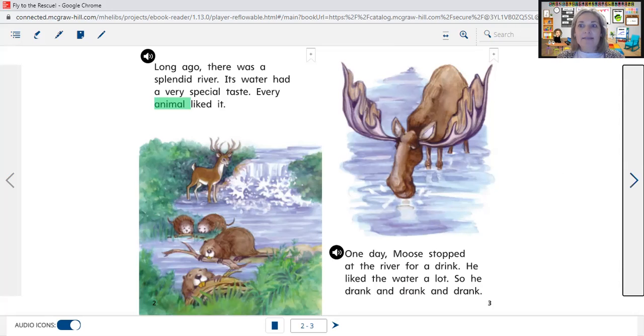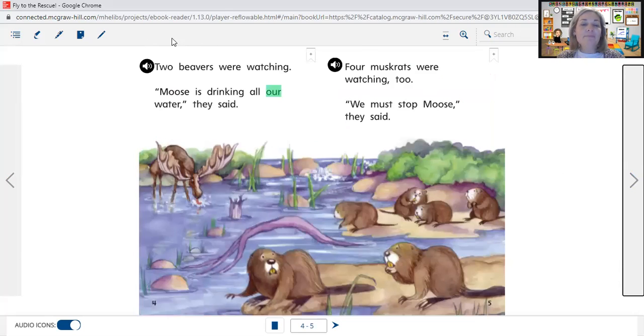Two beavers were watching. 'Moose is drinking all our water,' they said. Four muskrats were watching too. 'We must stop Moose,' they said. So two beavers are watching and four muskrats are watching, and they're afraid Moose would drink all the water and they wanted to stop him.